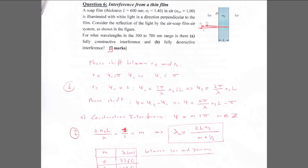The next problem is about interference. We have a thin film of index N2 in air. They give you the thickness L and N2. White light is incident perpendicularly. We need to find for which wavelengths in the 300 to 700 nanometer range there is fully constructive interference, and for which there is fully destructive interference.